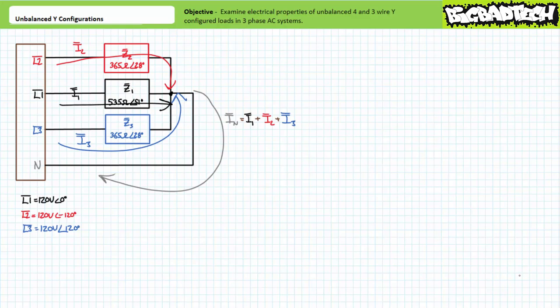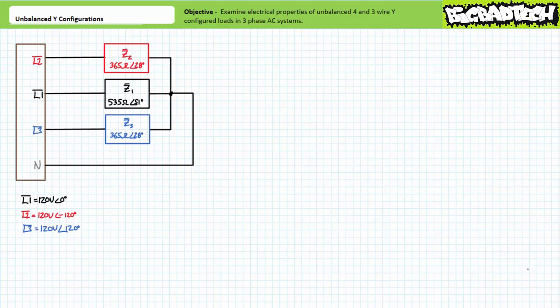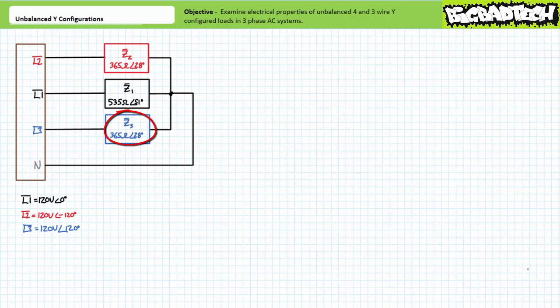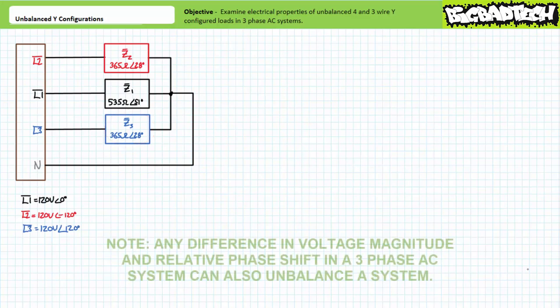Let's try an application of these principles. Consider a 120/208 volt, 60 hertz, three-phase AC source supplying power to an unbalanced four-wire Y-configuration. Load impedance Z1 has a magnitude of 535 ohms at an angle of 51 degrees — this is the odd man out. Load impedance Z2 has a magnitude of 365 ohms at an angle of 28 degrees, and load impedance Z3 also has a magnitude of 365 ohms at an angle of 28 degrees. This is the definition of an unbalanced load.